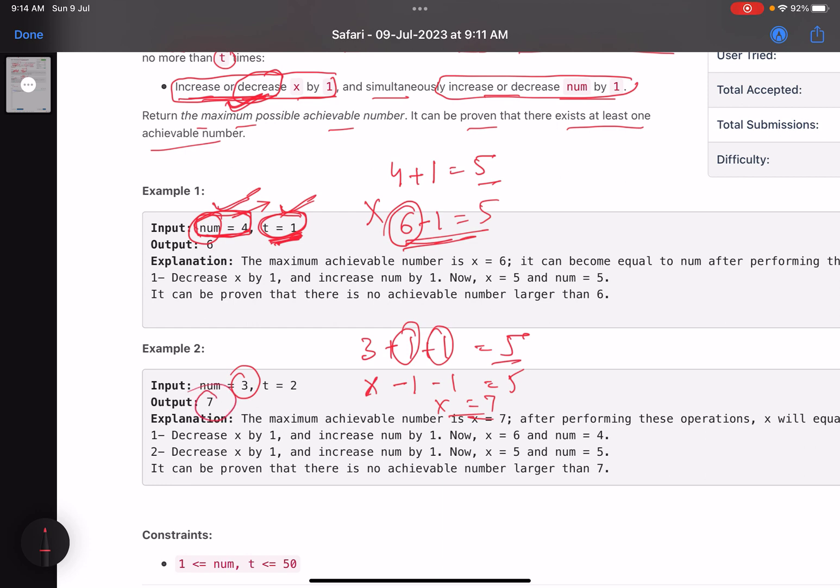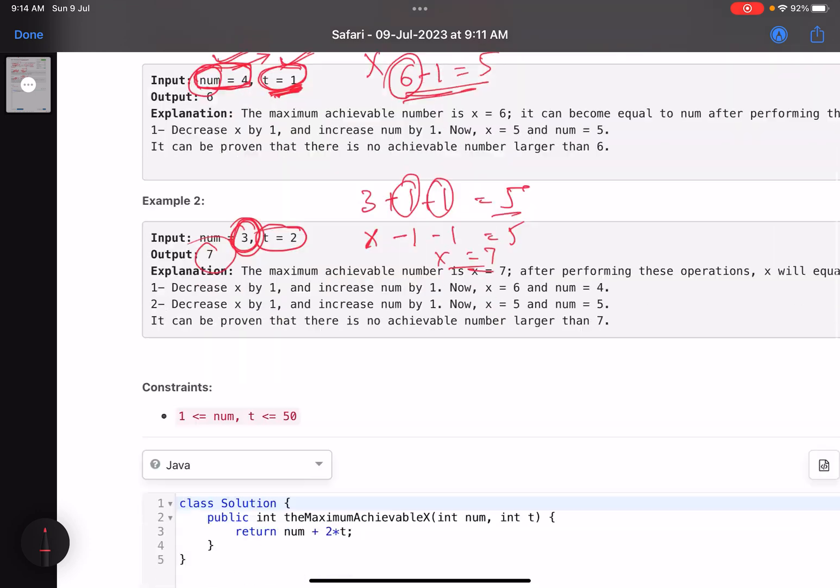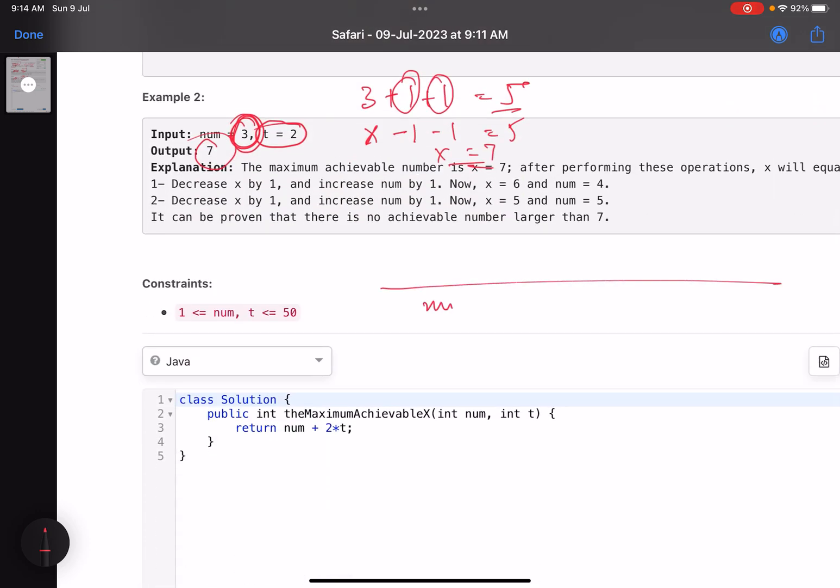In short, whatever is my num, I am basically multiplying this number by 2 and adding it. This is my number line: num is here, x is here. I can perform t operations, so this jumps t times by incrementing, this jumps t times by decrementing. The distance between x and num is x minus num equals 2 into t, so x is 2 into t plus num.